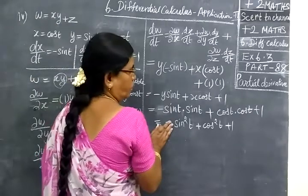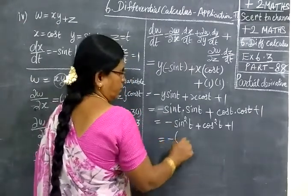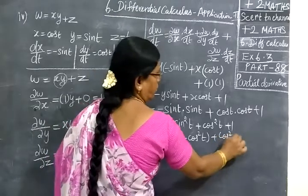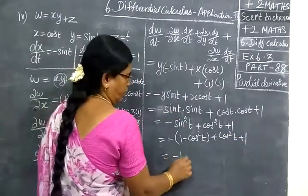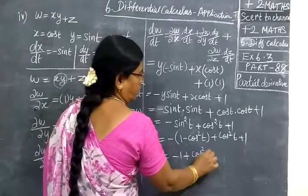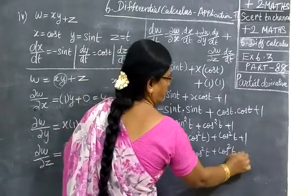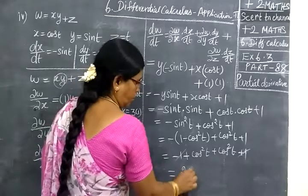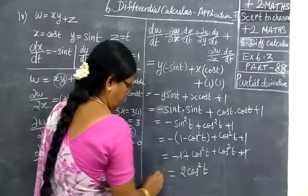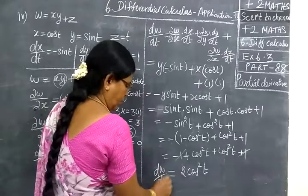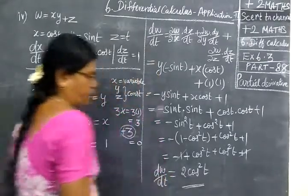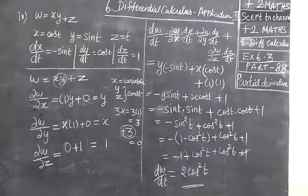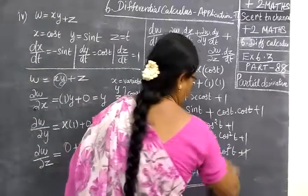So in the minus line, sin square t here we can write it as 1 minus cos square t. So here cos square t plus 1, take minus inside, minus 1, minus minus plus cos square t, plus cos square t plus 1. So plus 1 minus 1 cancel, so cos square t, cos square t, 2 cos square t. This is dw by dt. Answer is 2 cos square t, so this answer is correct.